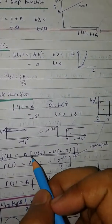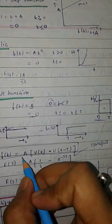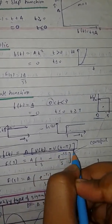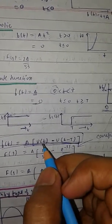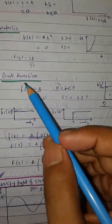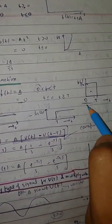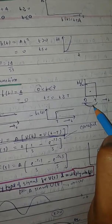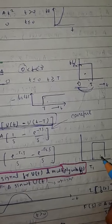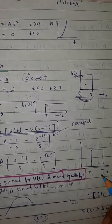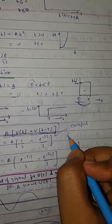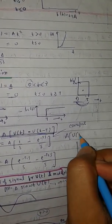To find this type of gate function, we can subtract a delayed step function from a unit step function. As you can see, if we subtract one from the other we get the gate function. So the main equation we get for the gate function is obtained this way. Generally we use the gate function when we have some situation between 0 and some interval.